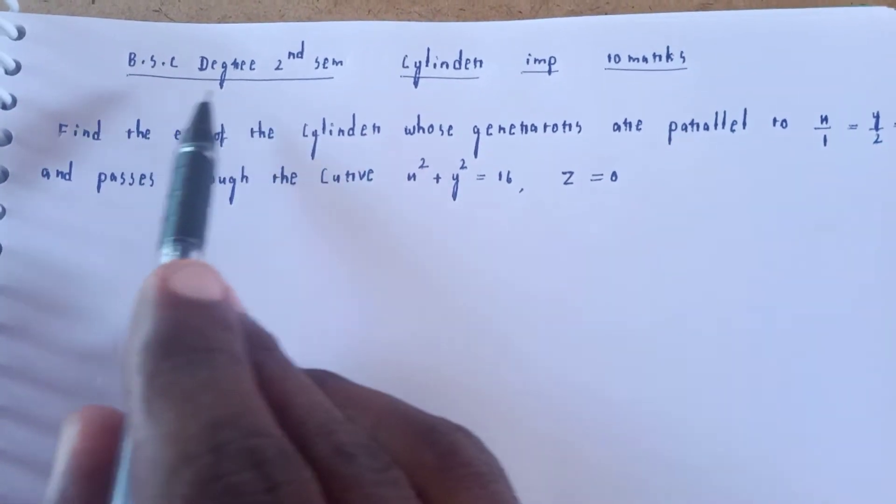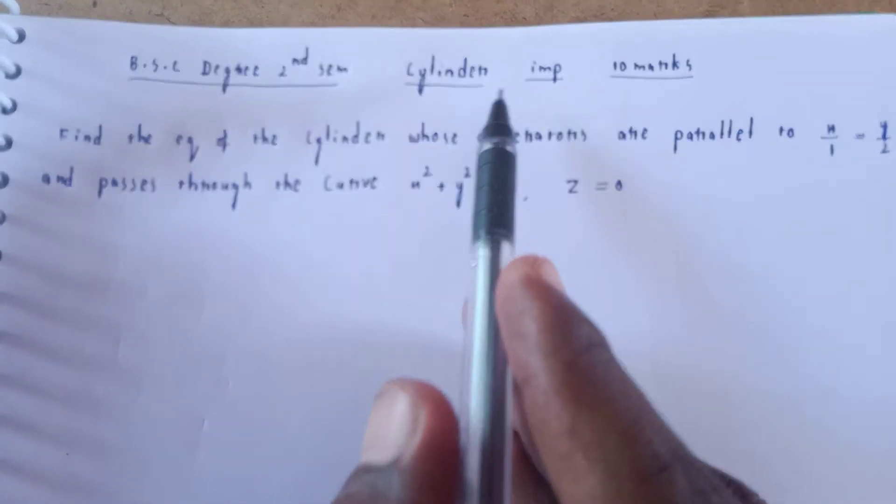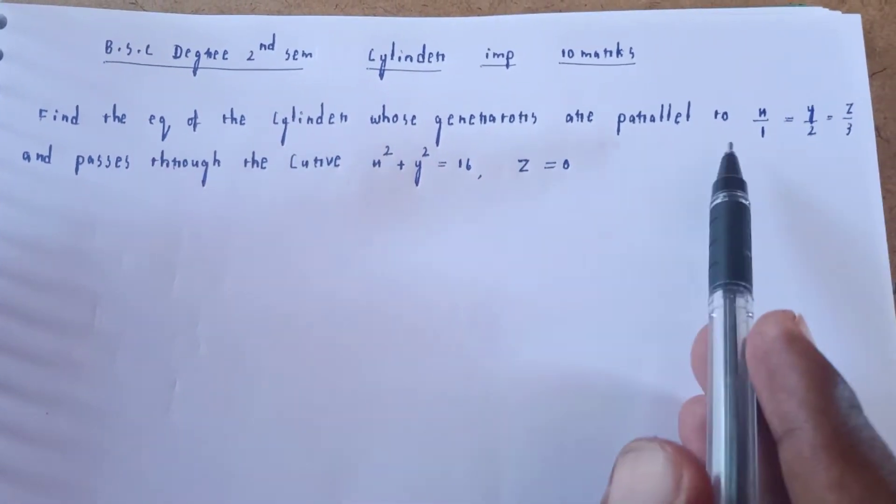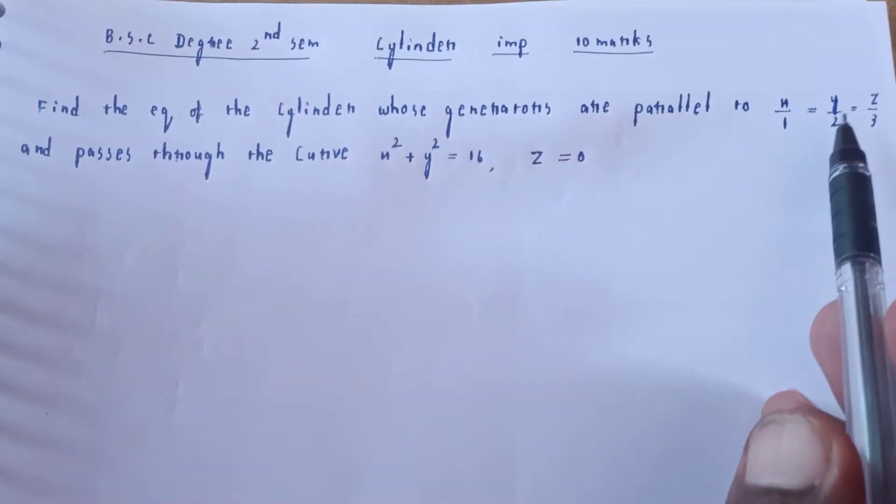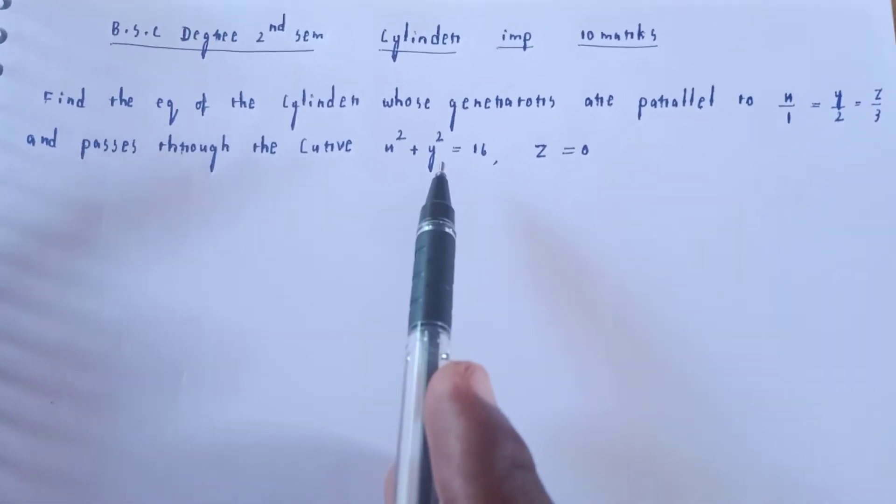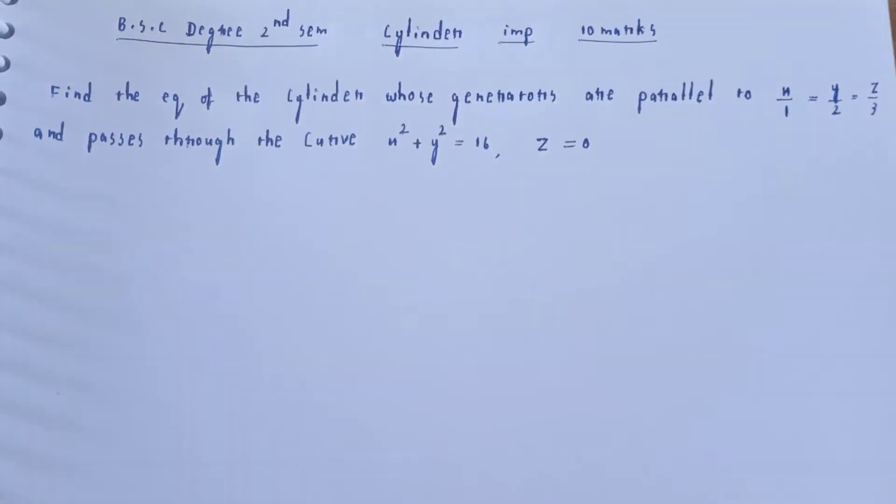Welcome to my channel, BSc degree second semester cylinder. Find the equation of the cylinder whose generators are parallel to x/1 = y/2 = z/3 and pass through the curve x² + y² = 16, z = 0.